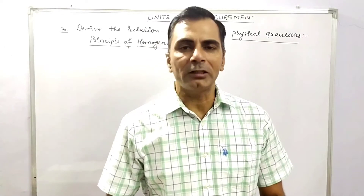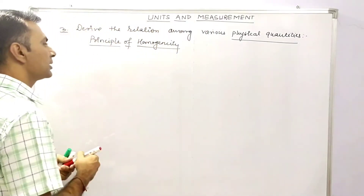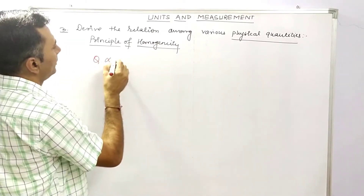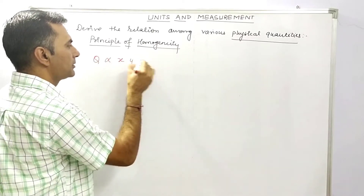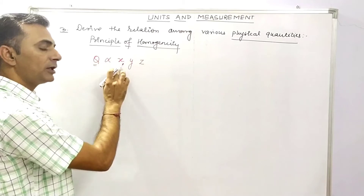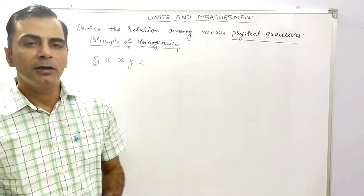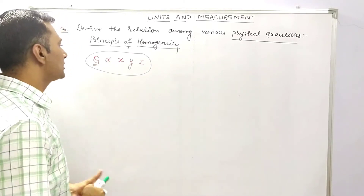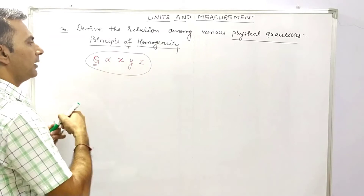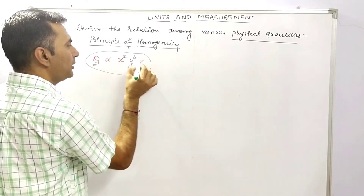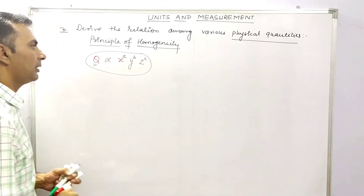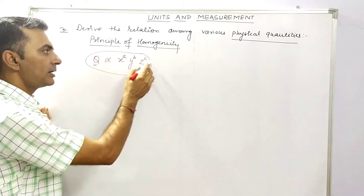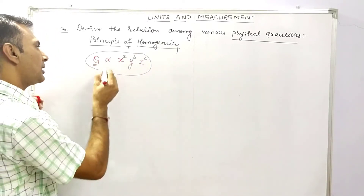In short, suppose we have a physical quantity q that depends upon physical quantities x, y, and z. We assume that q is directly proportional to x raised to power a, y raised to power b, and z raised to power c.